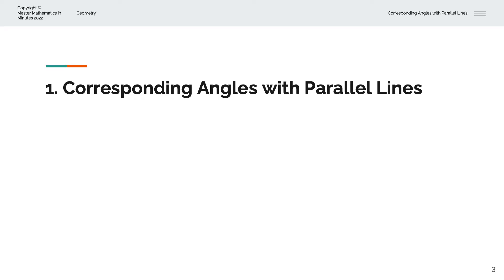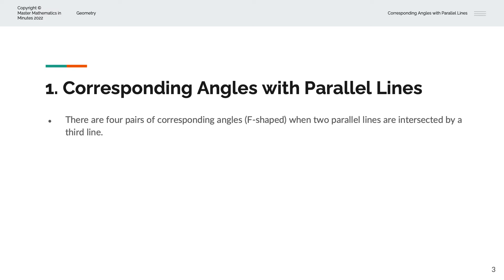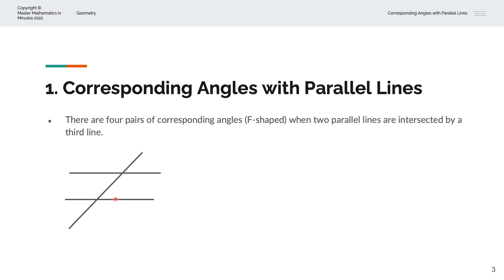So, what are corresponding angles with parallel lines? There are four pairs of corresponding angles when two parallel lines are intersected by a third line. We'll consider this visually. We have two parallel lines, and these two lines are intersected by a third line.